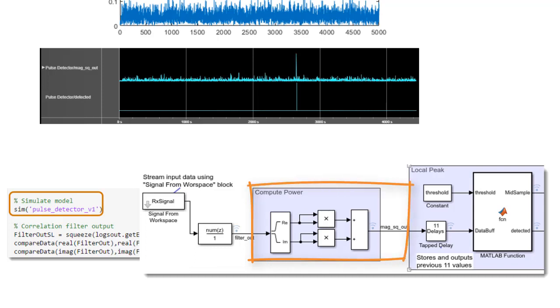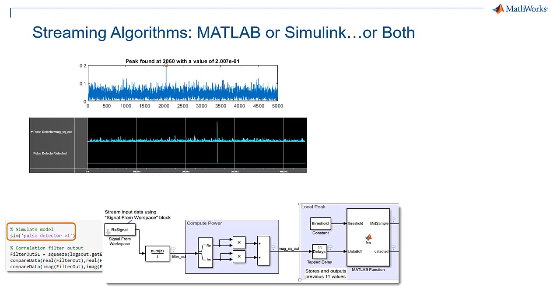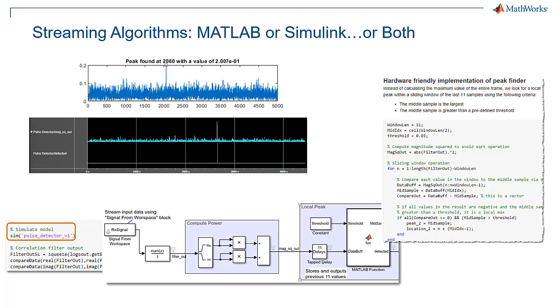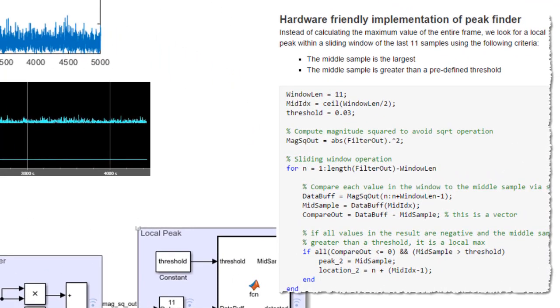Then we need to find the magnitude squared, and we can architect it to square both the real and imaginary components in parallel. Now to find the max, we're going to store a rolling buffer of the most recent 11 samples. This is easy to program in MATLAB, so we can use a MATLAB function block, which will find the peak of those 11 samples by checking if the middle sample is larger than the others, and also above a minimum threshold, so it can be identified as an actual peak.